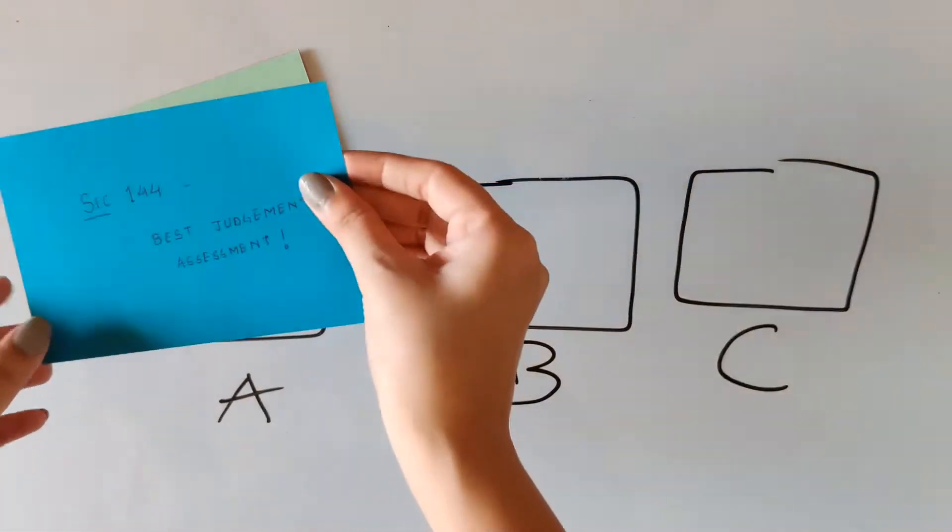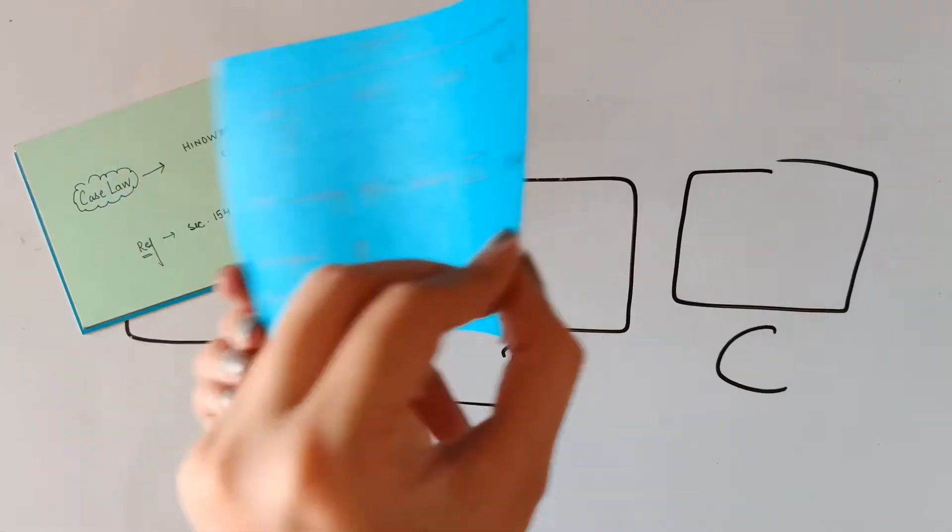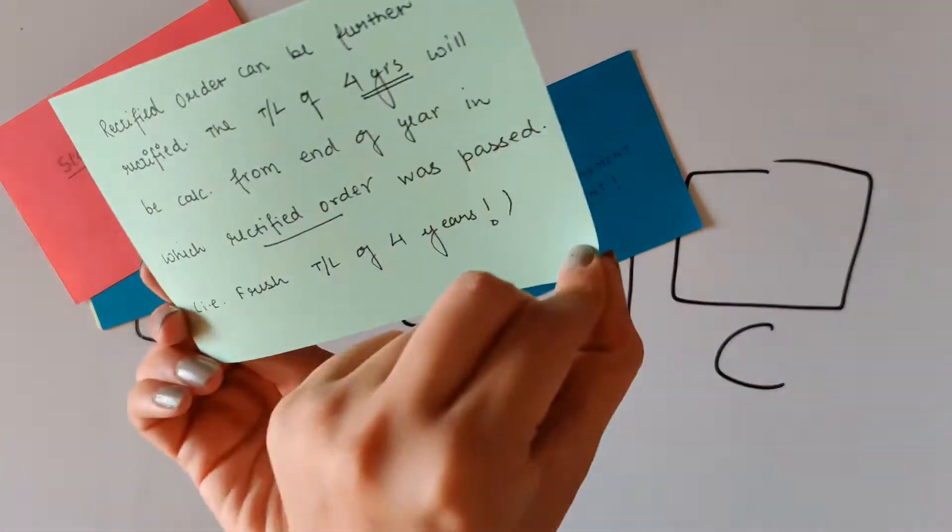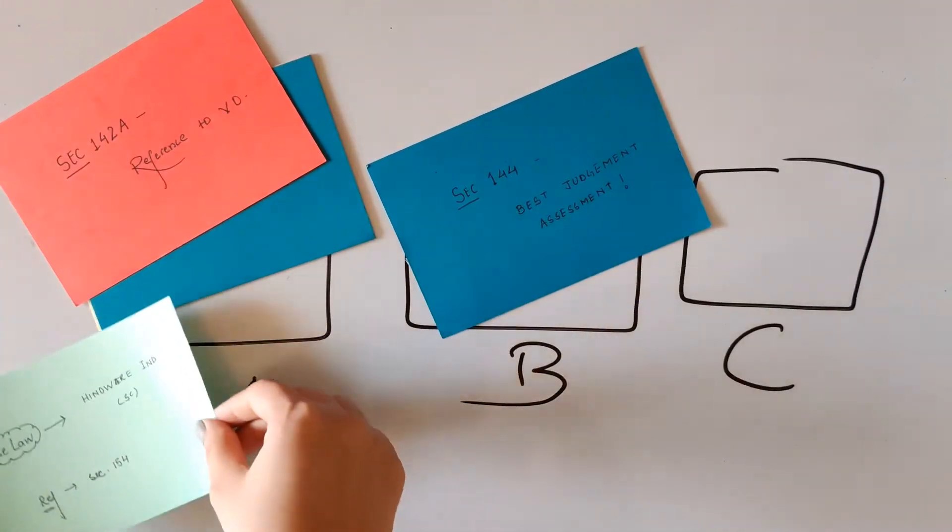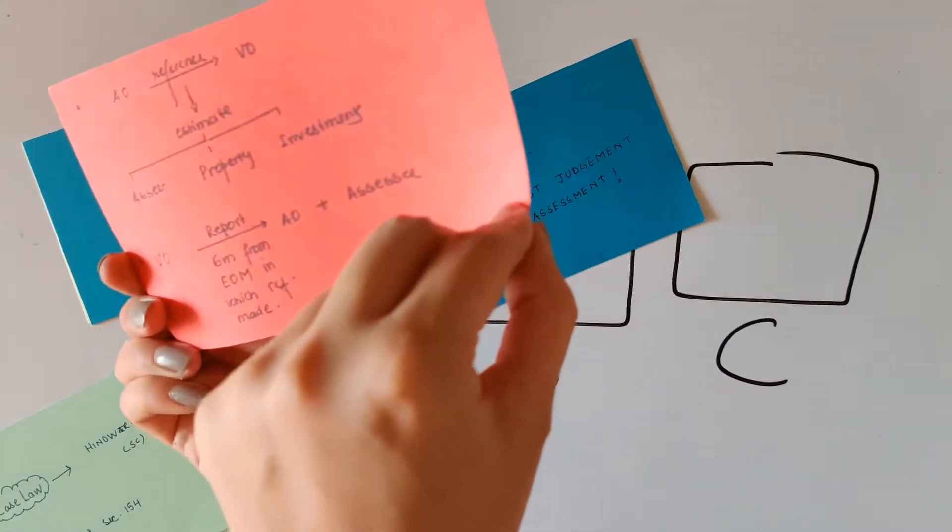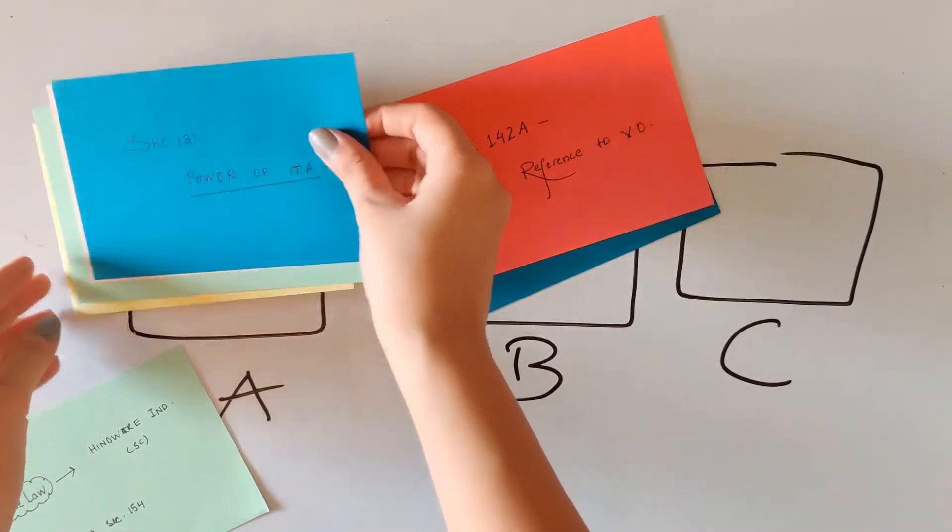Iske baad, pick up a card, read the question and try to recall the answer on your own. If you are able to recall the answer, put that in the second box. If not, put that back in the original deck and repeat the same process with all the other cards.